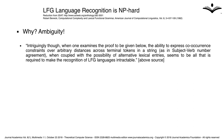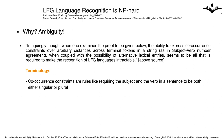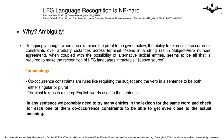Let's understand what Berwick is saying in plain English. Co-occurrence constraints are rules like requiring the subject and the verb in a sentence to be both either singular or plural. Terminal tokens in a string are just English words used in the sentence. Berwick is saying that in any sentence, we probably need to try many entries in the lexicon for the same word and check co-occurrence constraints to get even close to the actual meaning.